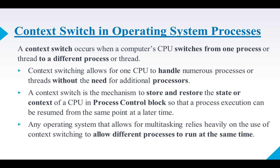So in relation to that thread and the process, we are going to see what we mean by context switching. Context switching is when the computer CPU handles its transition from one process to another process, or from one thread to another thread. Context switching allows one CPU to handle numerous processes — it allows the execution of numerous processes or threads without the need of any additional processor.